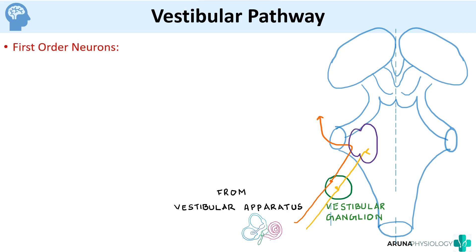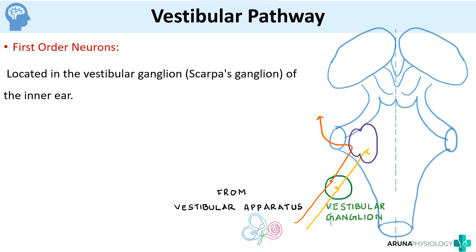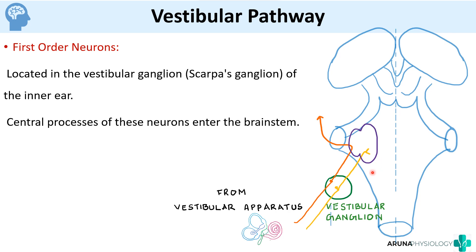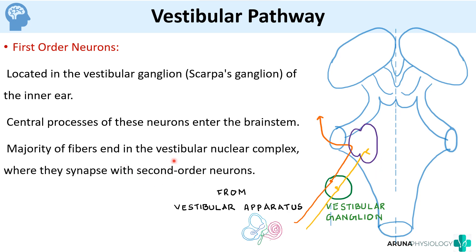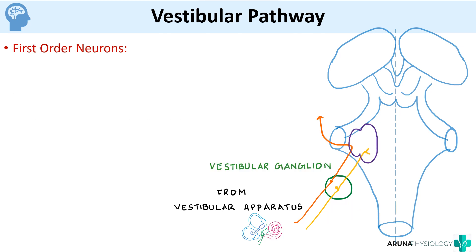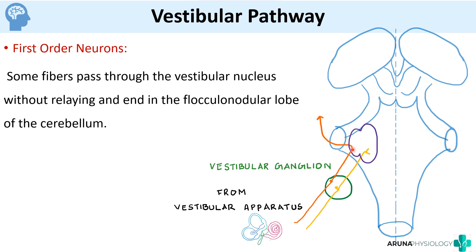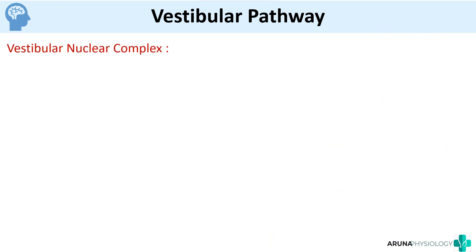The first-order neuron arises from the vestibular apparatus and passes through the vestibular ganglion, also called Scarpa's ganglion. The central process of these neurons enters the brainstem, where the majority of the fibers end in the vestibular nuclear complex and synapse with the second-order neuron. However, some fibers pass through the vestibular nucleus without relaying there, and end directly in the floccular nodular lobe of the cerebellum.